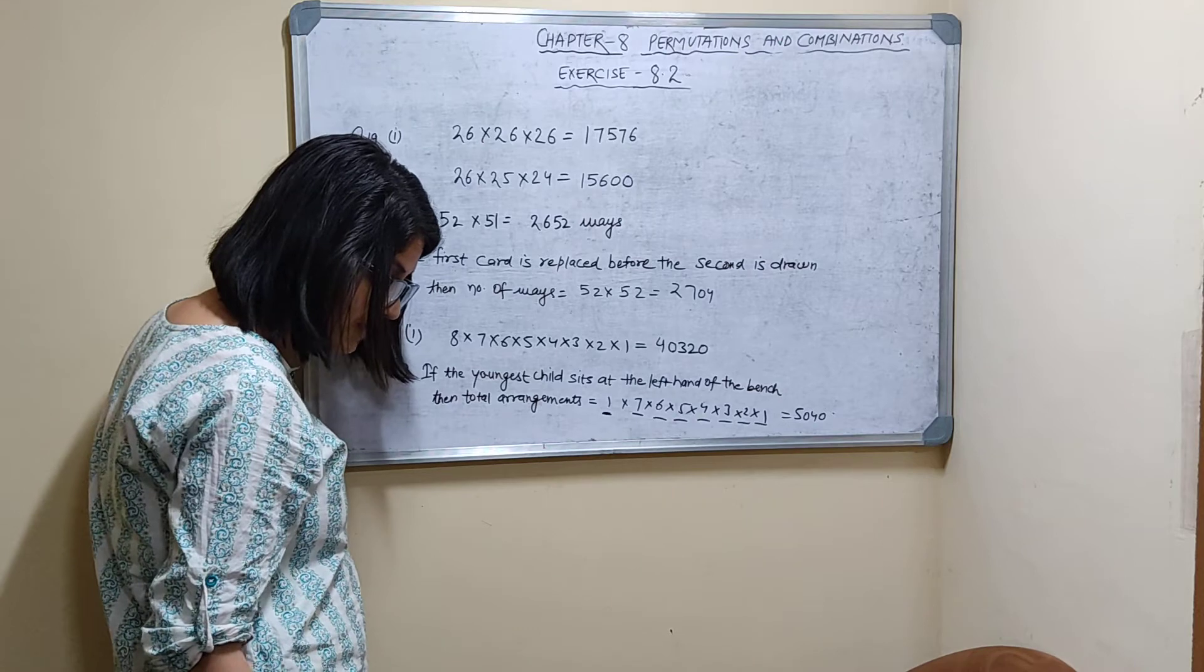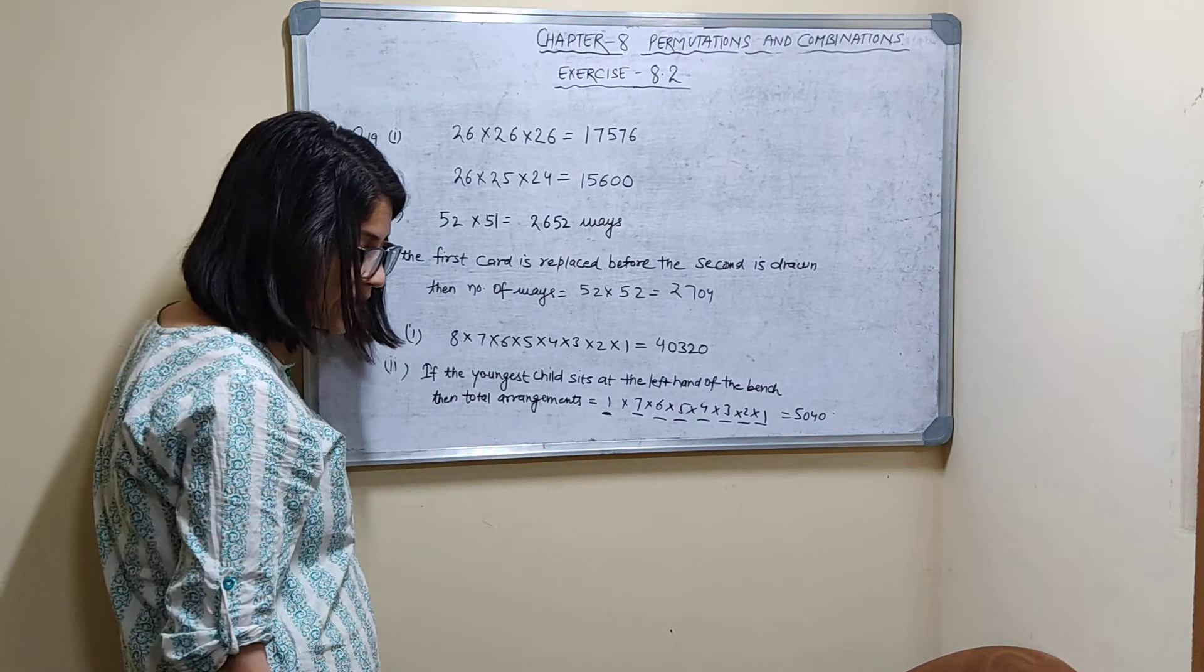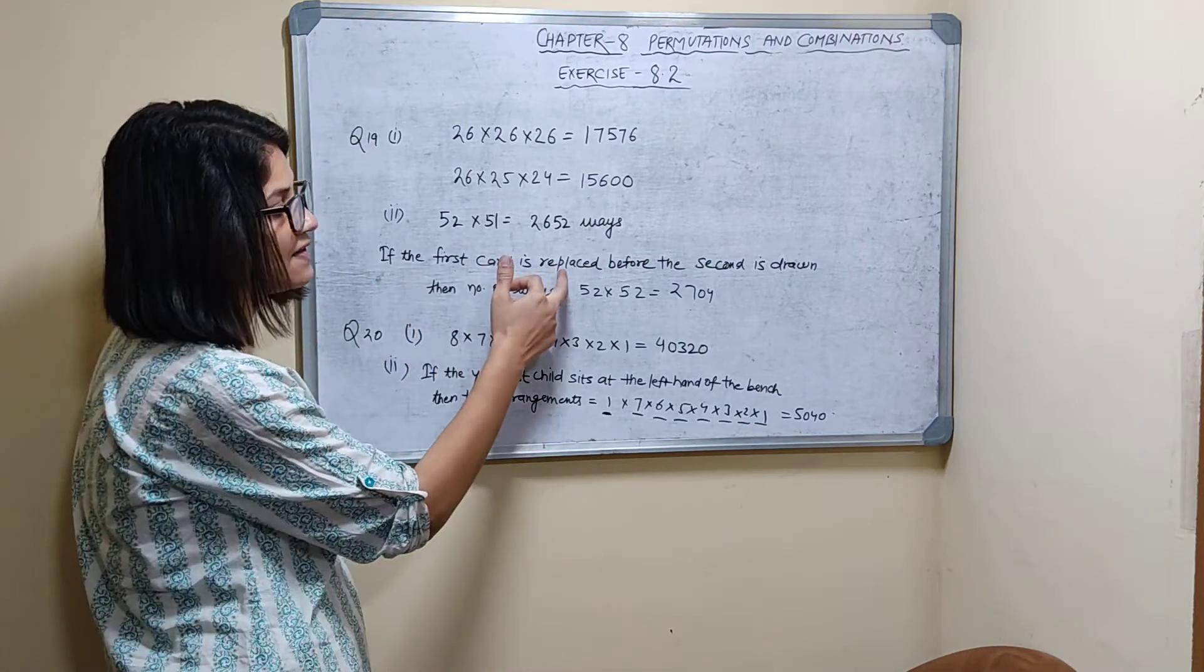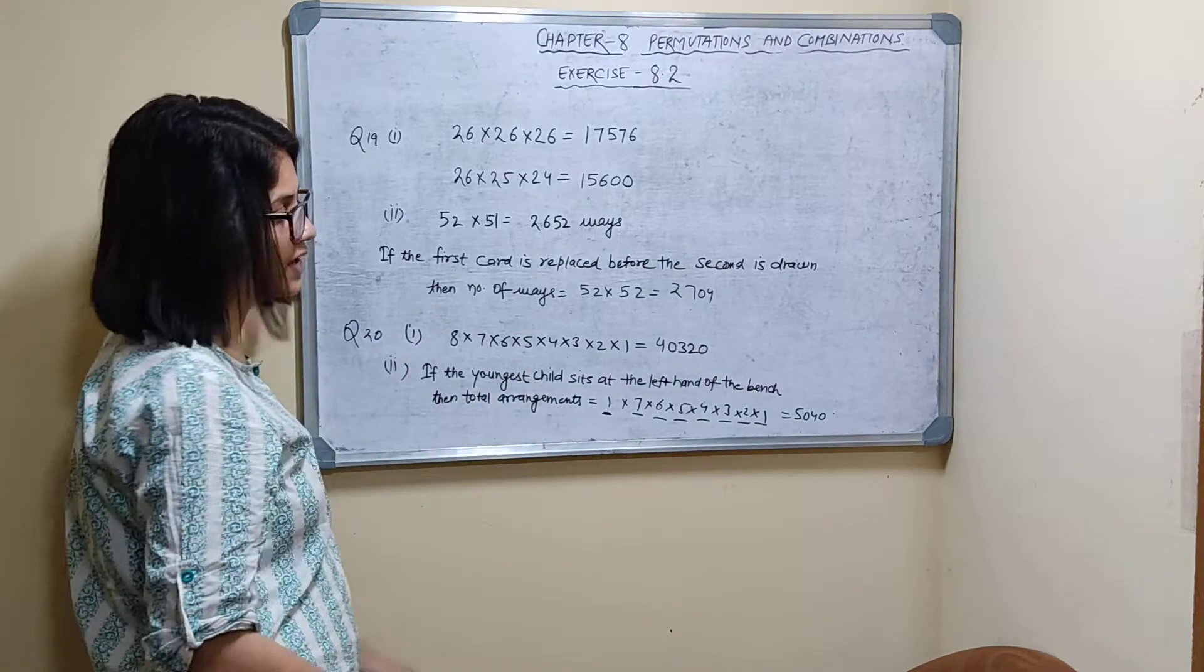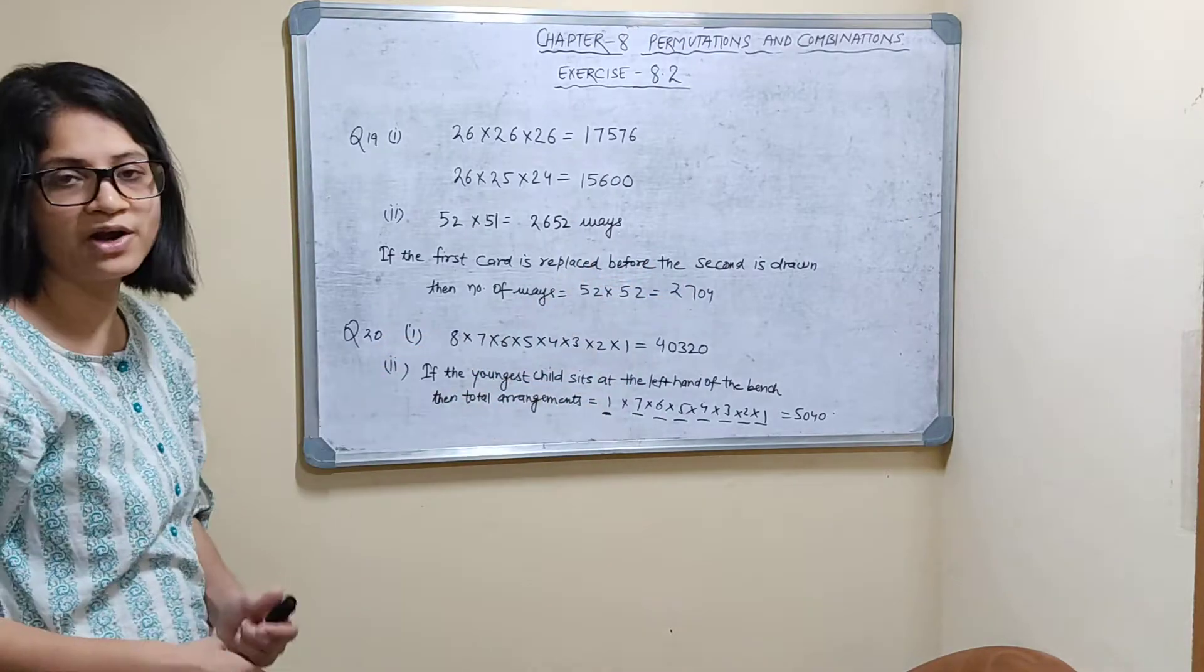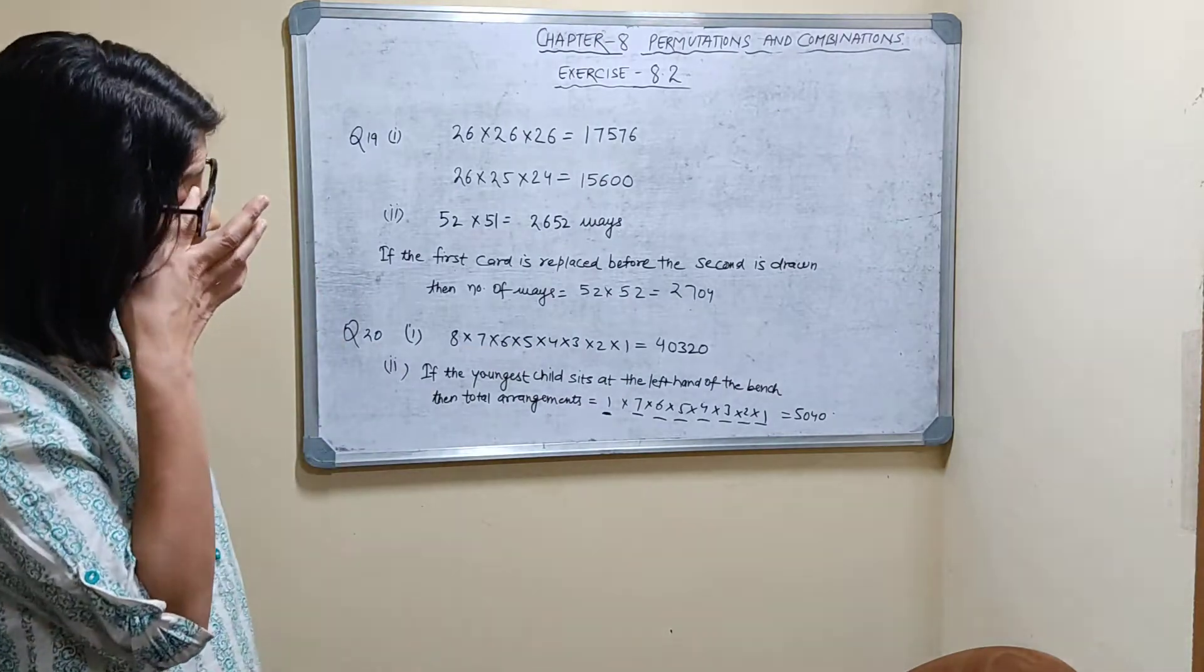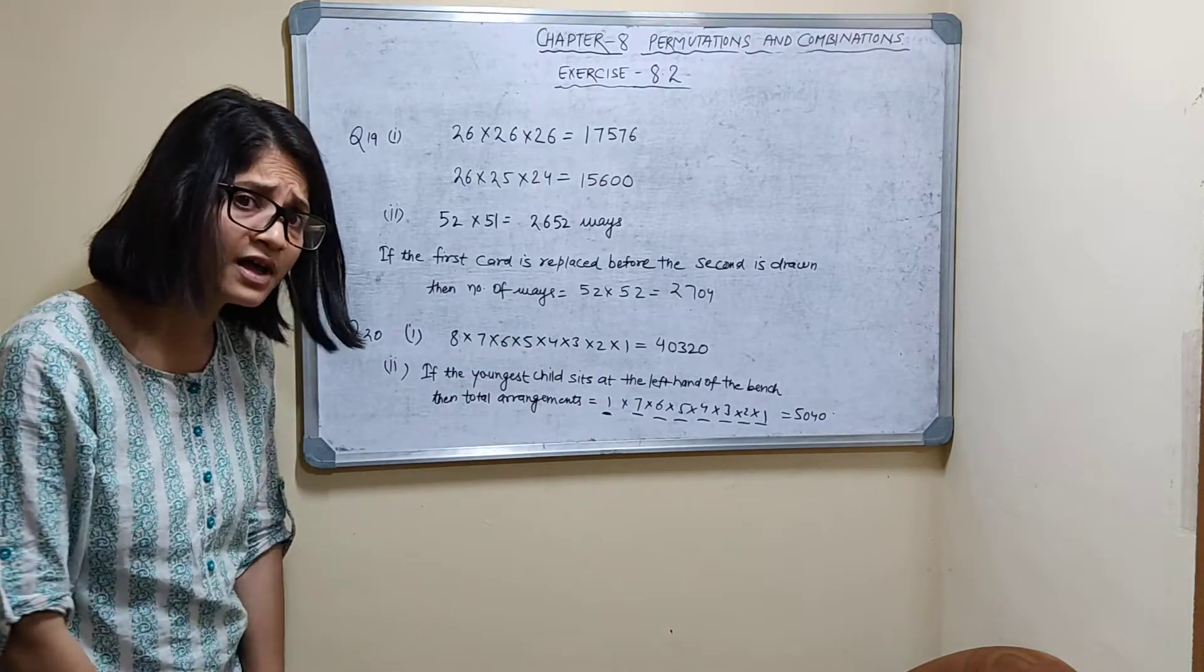Now in the second, they are asking what will be the number of ways if the first card is replaced before the second is drawn. If the first card is replaced before the second is drawn, so again for second also 52 choices will be there. So 52 into 52, that is 2,704 ways are there.